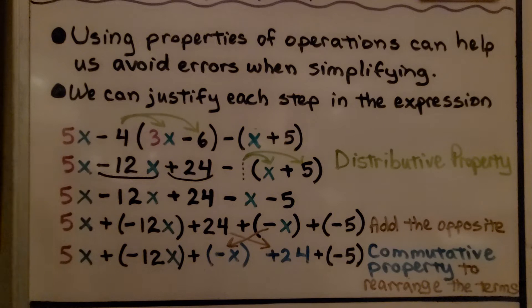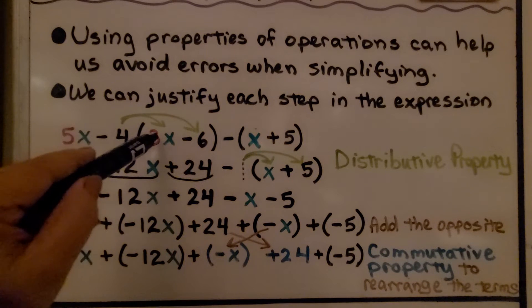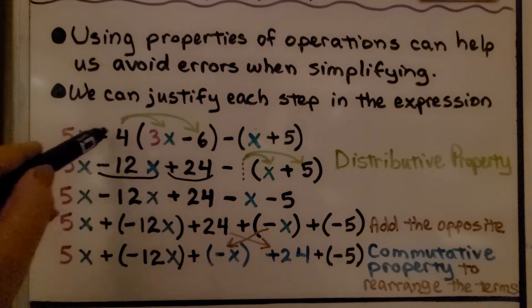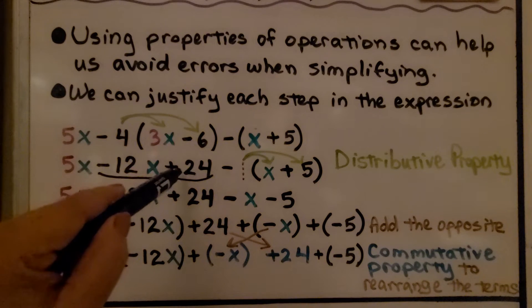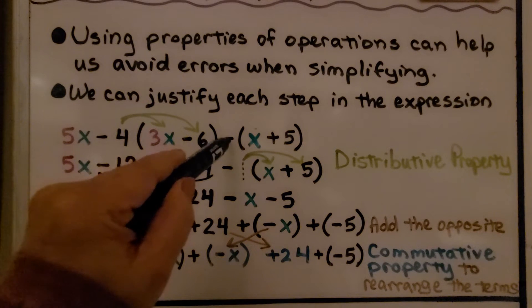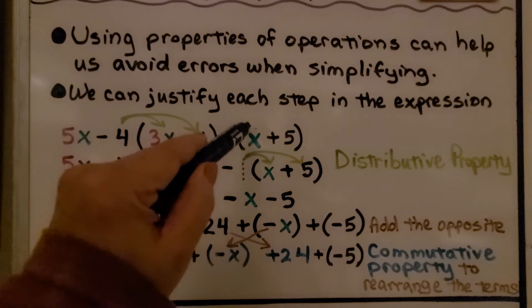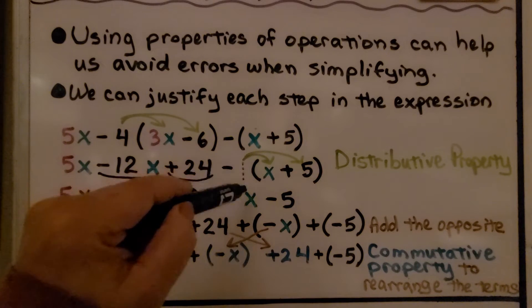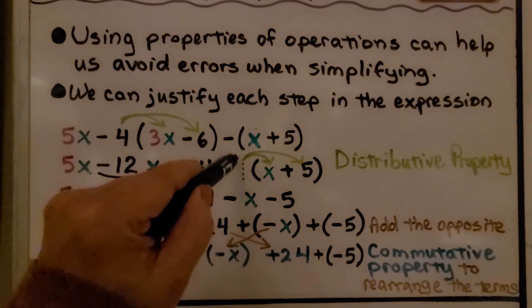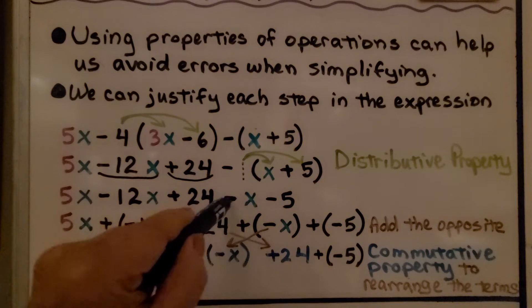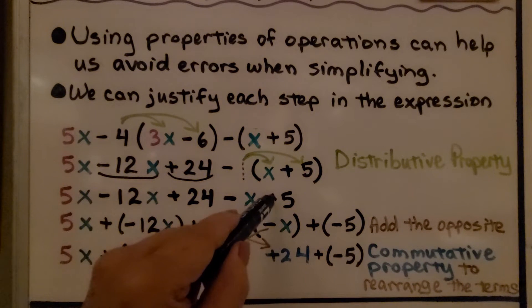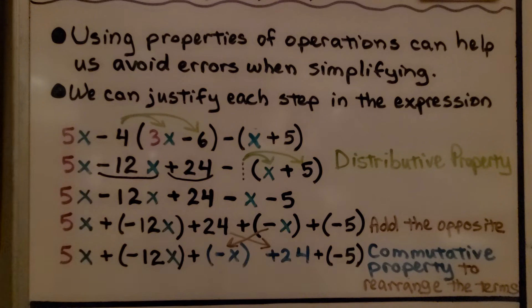First, we use the distributive property. We have negative 4 times positive 3x, which gives us negative 12x. We have negative 4 times negative 6, which gives us positive 24. Now we need to distribute this minus sign — this negative sign — to the x plus 5 in the parentheses. There's an invisible 1 here: negative 1 times x gives us negative x, and negative 1 times positive 5 gives us negative 5.